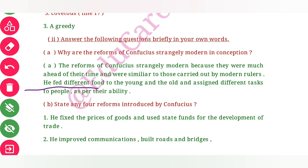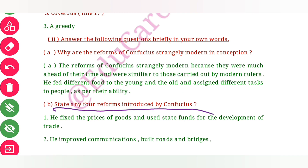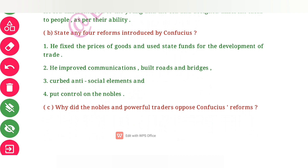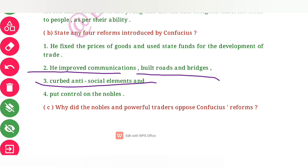He fed different food to the younger and older, and assigned different tasks to people as per their abilities. There are four reforms introduced by Confucius. First, he fixed the prices of goods and used state funds for the development of trade. He improved communication, built roads and bridges. Third, he curbed anti-social elements. And last, he put control on nobles.